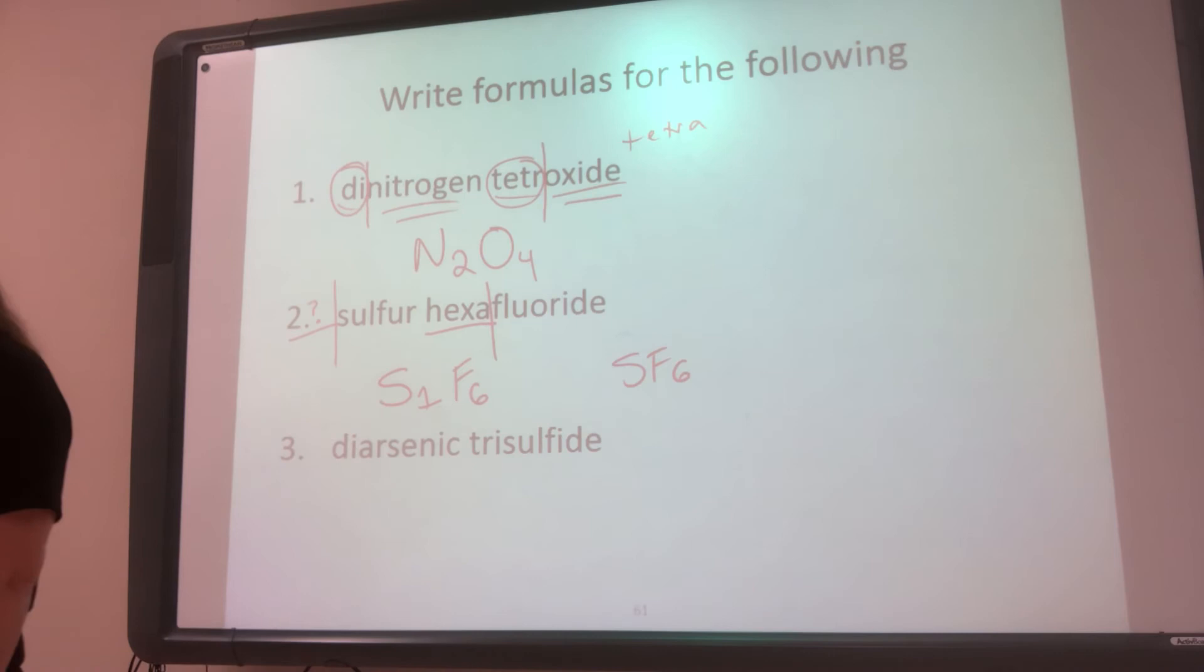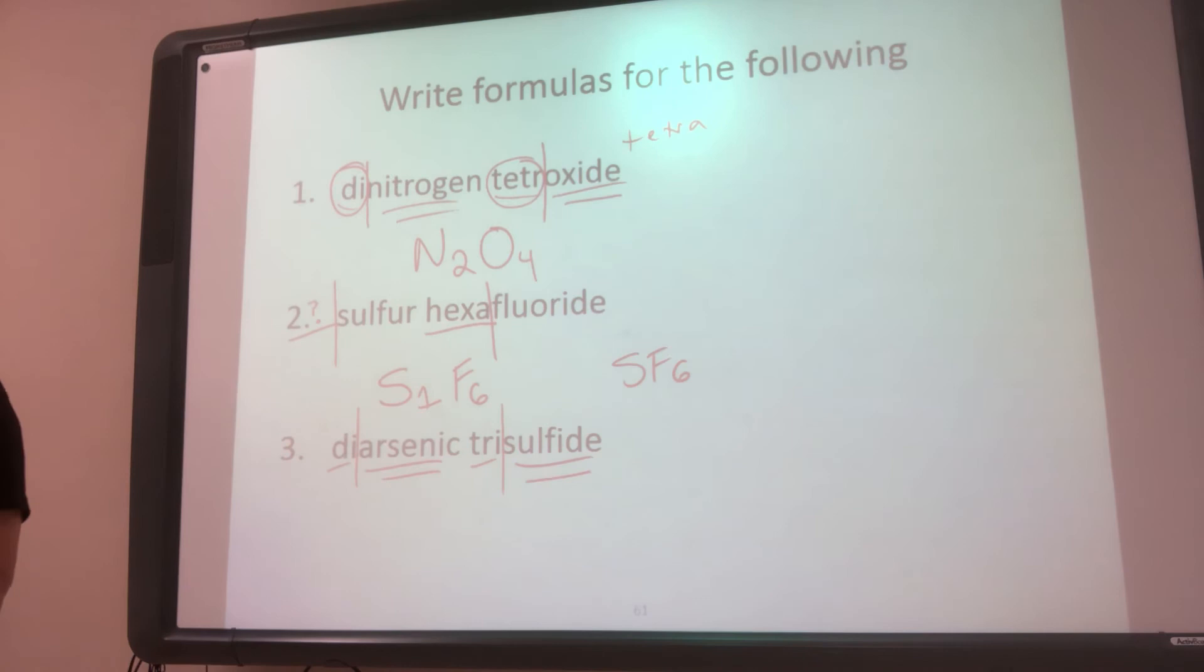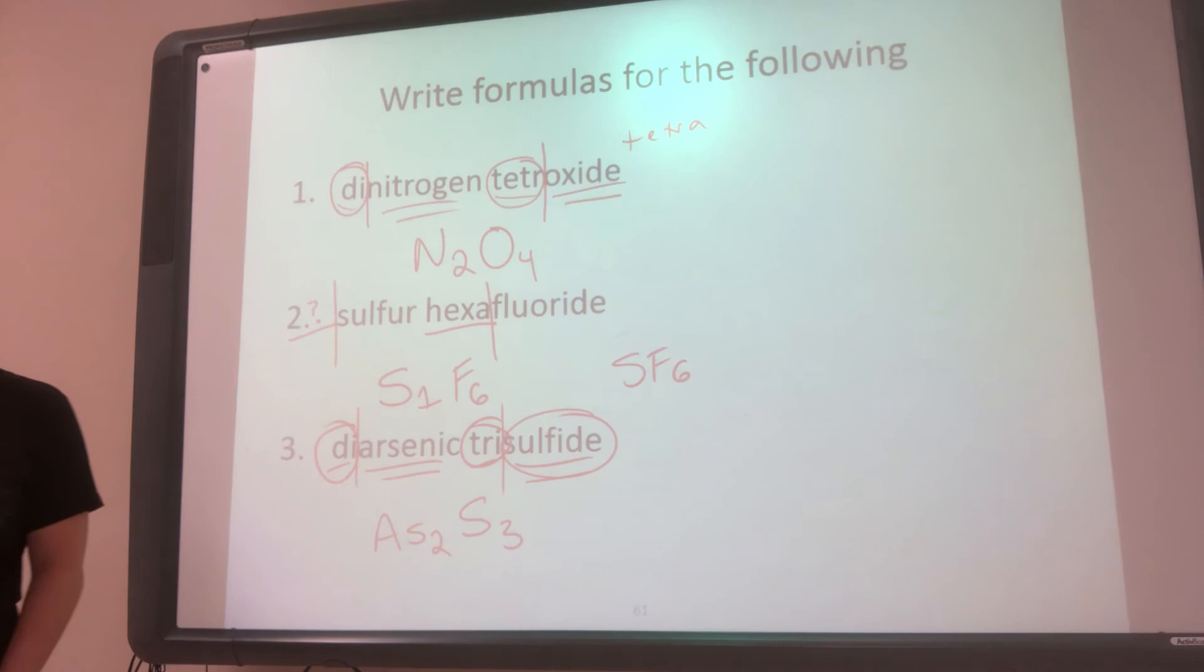All right, let's do the next one, diarsenic trisulfide. So I notice I've got a prefix, an element, a prefix, an element. So the first element is arsenic. So what is the symbol for that? You might be thinking AR because it's arsenic, but AR is argon. So this is why it's important to know your symbols to go with your names. So arsenic isn't AR, it's AS. And then how many do I have? Di stands for two. Sulfide is just the shortened version of sulfur. And sulfur is an S. And then tri stands for three.